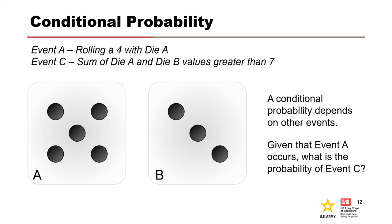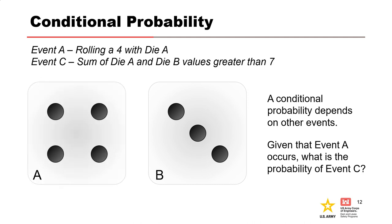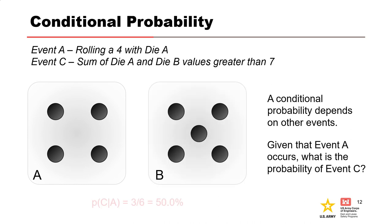Next, consider event C, where the sum of the values of die A and die B is greater than 7. If we have already rolled die A and it was a 4, knowing that event A has occurred tells us something about event C. We now know there are only 3 outcomes from the roll of die B that can be added to the 4 to get a value greater than 7. Therefore, given that event A has occurred, the probability of event C is 50%. This is a conditional probability.